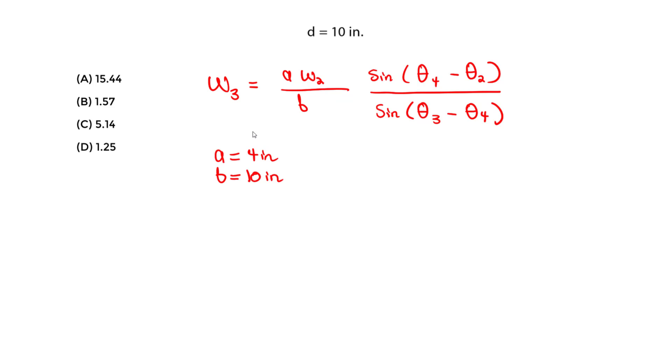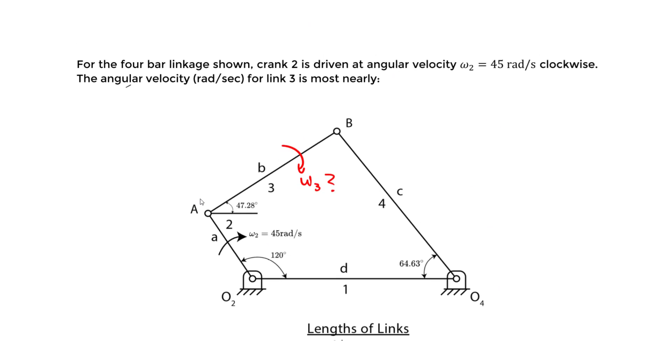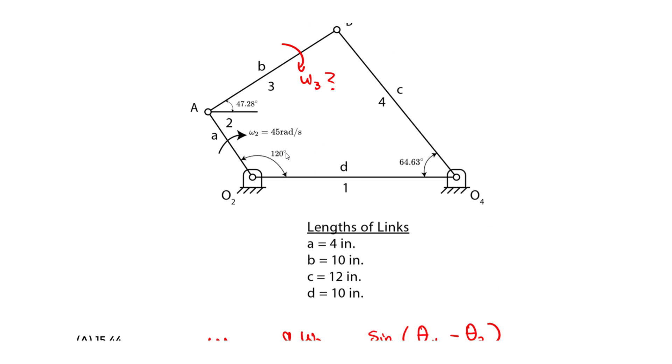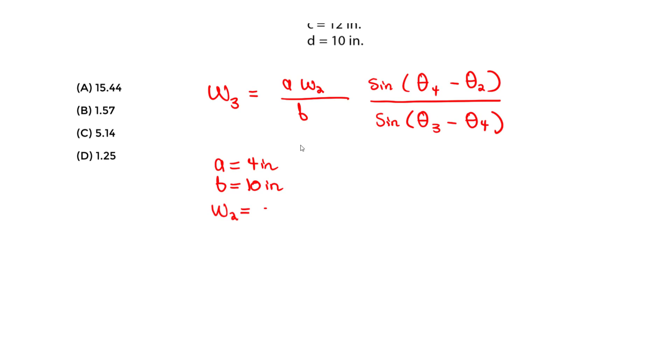So we have that omega_2 is actually given, right? That's what's driving this thing. That's what we supply to the crank and allows this linkage to move. That's 45 radians per second. So you just plug in 45, that's 45 radians per second.